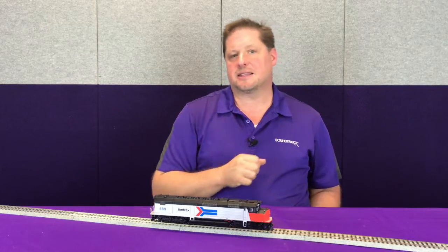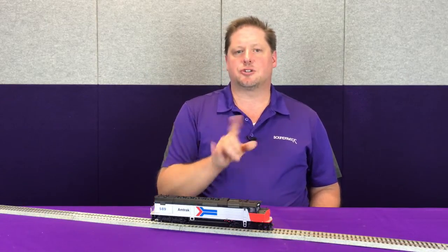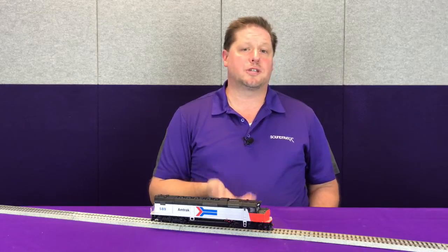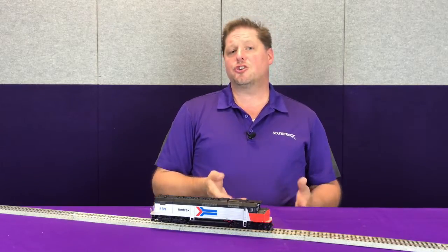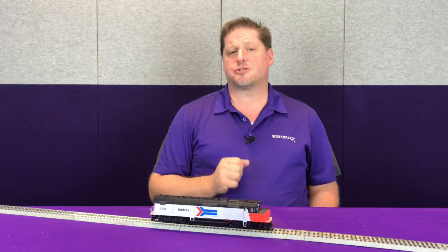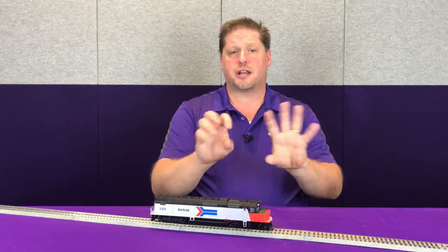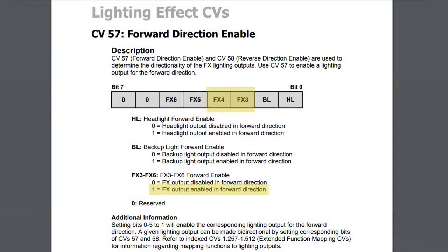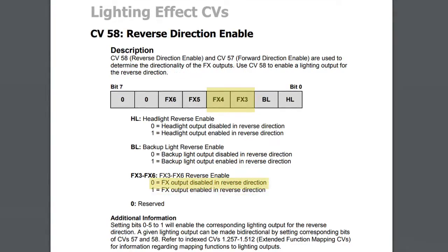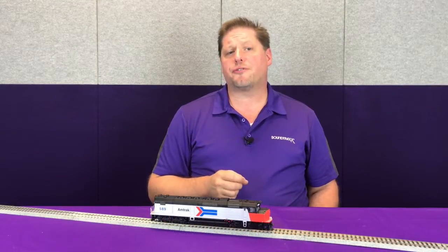In CV 57 the backup light is disabled, and in CV 58 it's the headlight that's disabled. This allows you to make lights directional. For example, if you want your ditch lights on only in the forward direction — using FX3 and FX4 for alternating flashing ditch lights — go to CV 57 and make sure they are enabled in the forward direction, then in CV 58 disable them for the reverse direction.